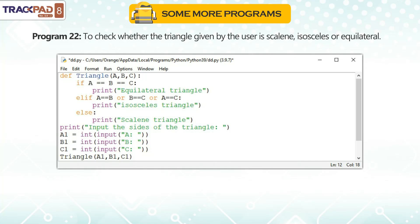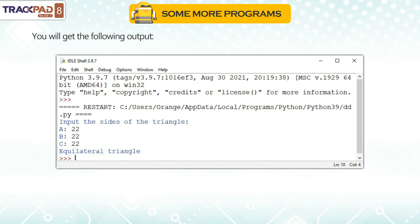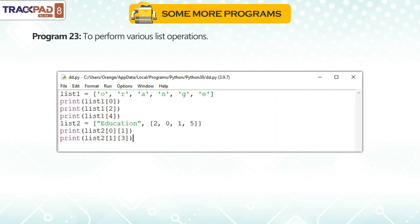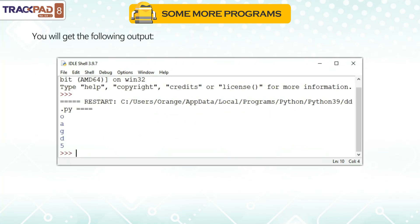Program 22: to check whether the triangle given by the user is scalene, isosceles, or equilateral — you will get the following output. Program 23: to perform various list operations — you will get the following output.